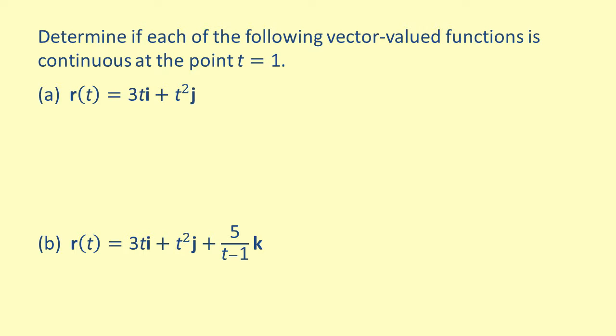Let's try some examples. You are asked to determine whether each of two functions is continuous at the point t equals one. For each, we will need to verify that the function exists at the given point, that the limit exists as t approaches the given point, and that these two quantities are equal to each other.